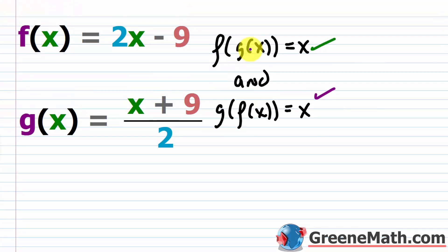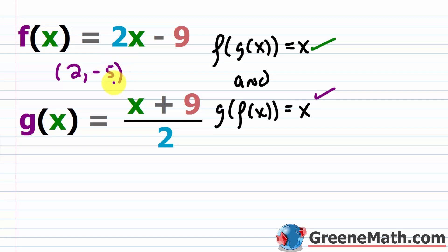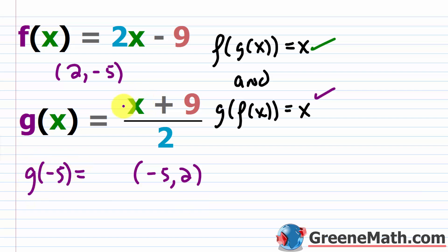To get a good intuition into this, let's just pick a point that works. Let's say f of 2. f of 2 is equal to what? You'd have 2 times 2, which is 4 minus 9, which is negative 5. So an ordered pair here is 2 comma negative 5. With the inverse, those are going to be flipped — the y value becomes the x value, the x value becomes the y value. So it should be true that an ordered pair that satisfies g of x would be negative 5 comma 2. Let's see: g of negative 5 gives you negative 5 plus 9, that's 4, divided by 2 is 2. So these two are the reverse of each other.